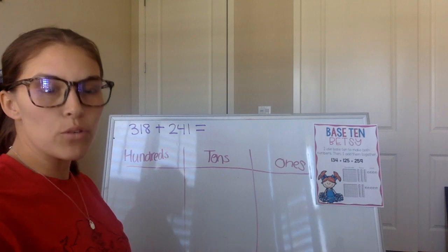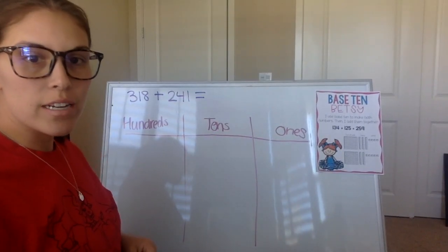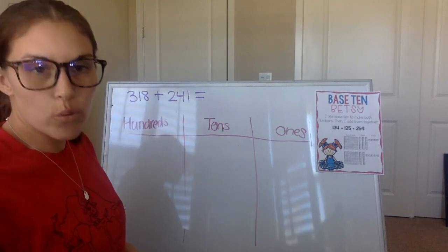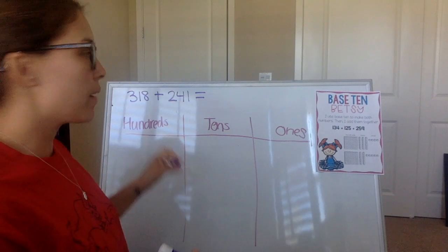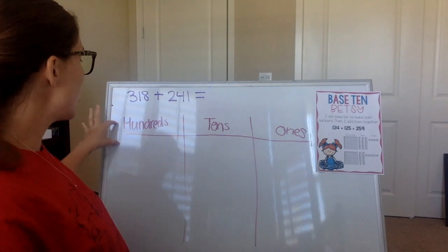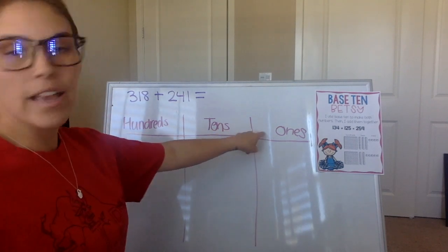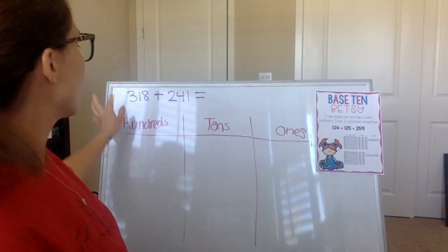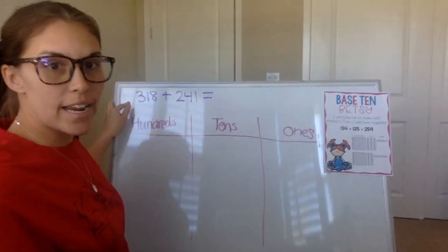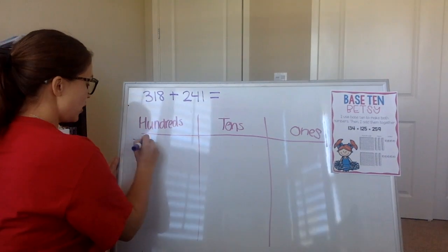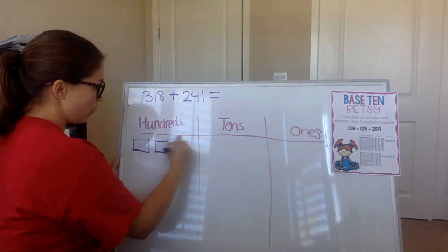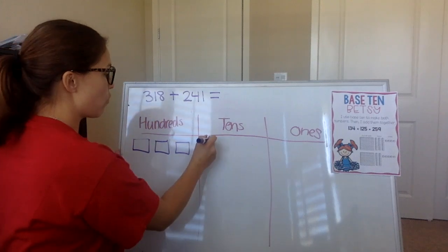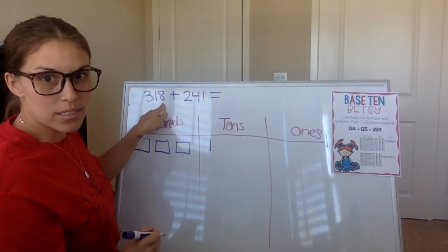All right boys and girls, I'm going to do another example. The next three-digit number I'm going to add is 318 plus 241. My first step is to break up 318 into base ten blocks. As you can see, I have my hundreds, tens, and ones chart to help me visually add all my numbers together. In 318, there are three hundreds. In 318, there is how many tens boys and girls? Excellent — one ten. And how many ones? Eight. Excellent.